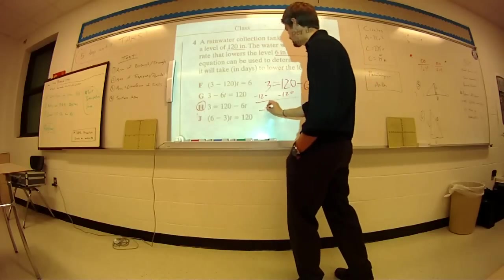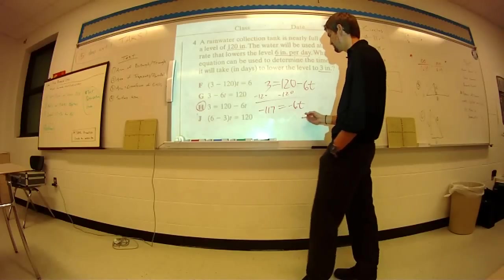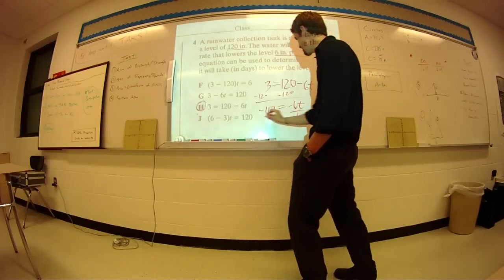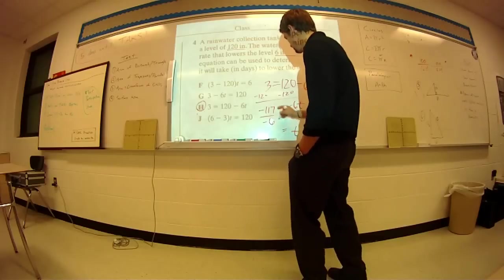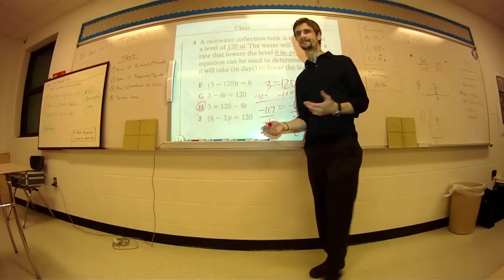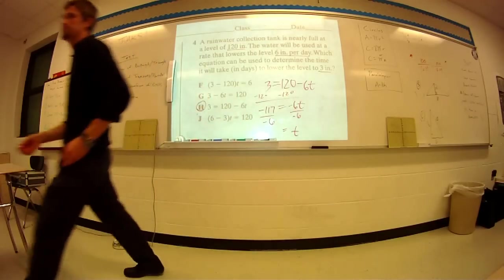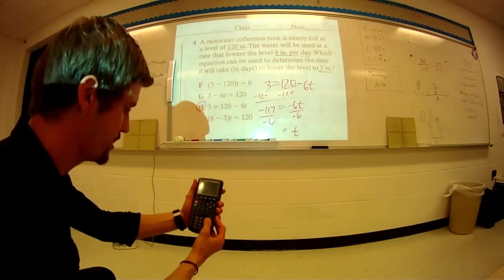Three minus 120 is going to be a negative 117 equals negative 6T. Now I'm going to divide by negative 6. So T is going to equal negative 117 divided by negative 6. I'm going to get a calculator for that because I don't think that's going to come out to be a whole number.